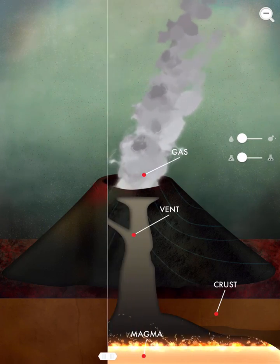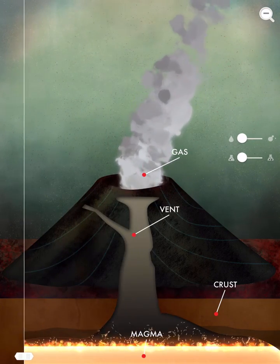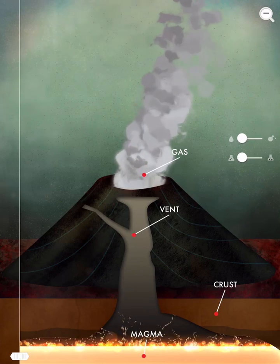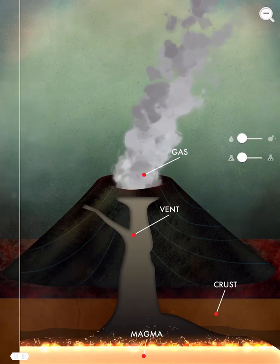What we're looking at right now is a shield volcano. Let's peel back the slider to reveal what's going on underneath the surface. We have our magma and our vent.